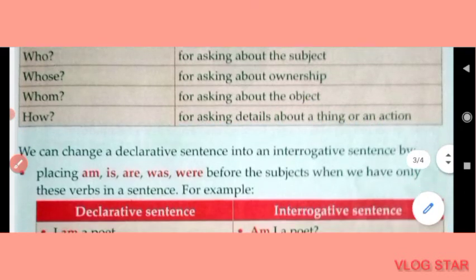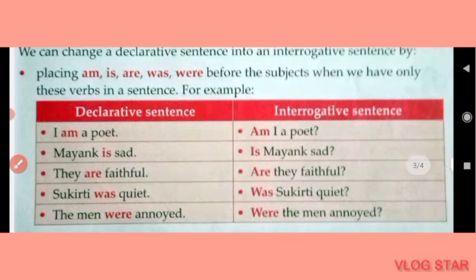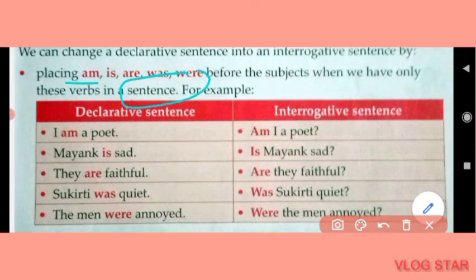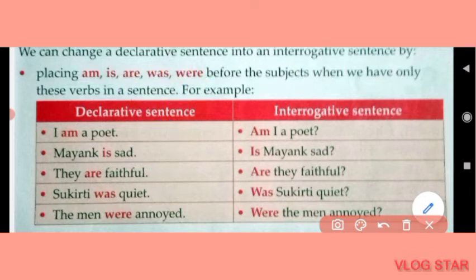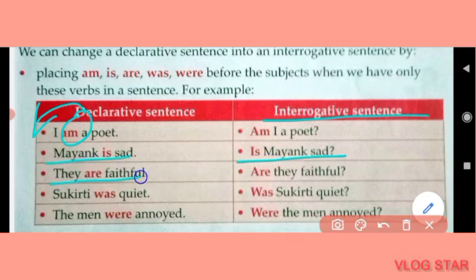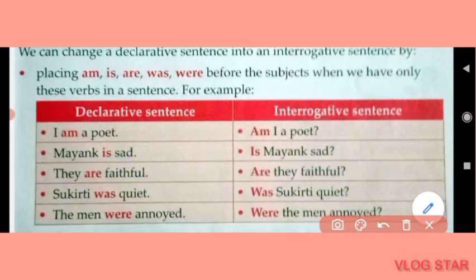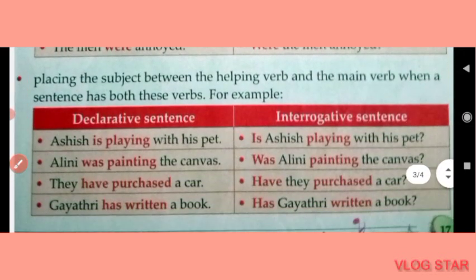We can change a declarative sentence into an interrogative sentence by placing am, is, are, was before the subject when we have only these verbs in a sentence. For example: Mayang is sad → Is Mayang sad? They are faithful → Are they faithful? Sukriti was quiet → Was Sukriti quiet? The men were annoyed → Were the men annoyed?